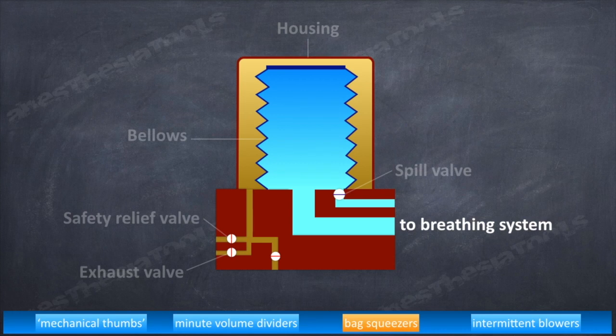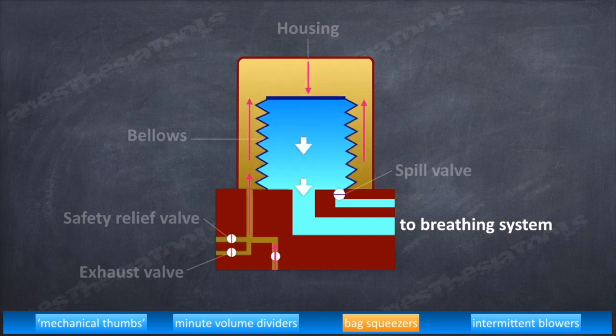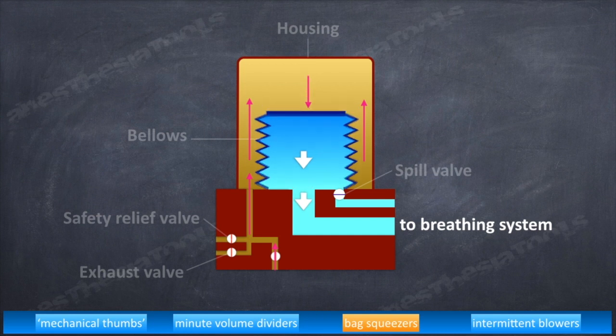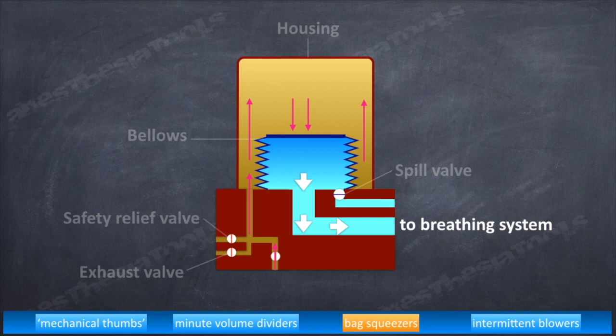First, the drive gas flows into the housing. Then it starts to push the bellows from within. Once the bellows are pushed down, the fresh gas or patient gas within the bellows gets pushed into the breathing circuit. As more drive gas gets in, bellows get pushed more and more. Flow occurs into the breathing circuit.